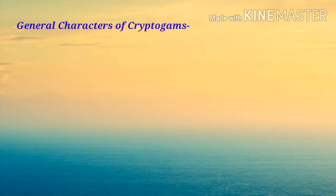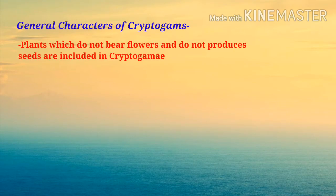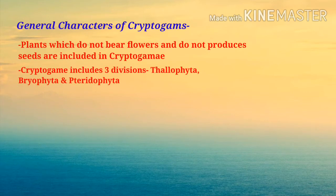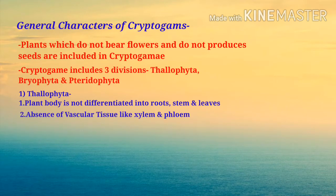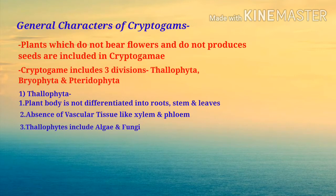General characters of cryptogams: plants which do not bear flowers and do not produce seeds are included in cryptogams. Cryptogams include three divisions: thallophyta, bryophyta, and pteridophyta. Thallophyta — the plant body is not differentiated into roots, stem, and leaves. There is also an absence of vascular tissue like xylem and phloem, through which nutrients are provided to plants. Thallophytes include algae and fungi.